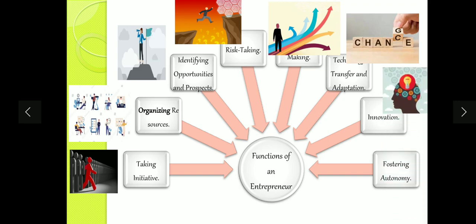Seventh, innovation — innovation means coming up with something brilliant. You constantly have to come up with something new, something different that no one else does. This is a very important function of an entrepreneur. Last is fostering autonomy — autonomy means self-power, when you are the one controlling yourself. It is the entrepreneur's function to maintain autonomy, use self-control, and nurture it. These are the functions of an entrepreneur.